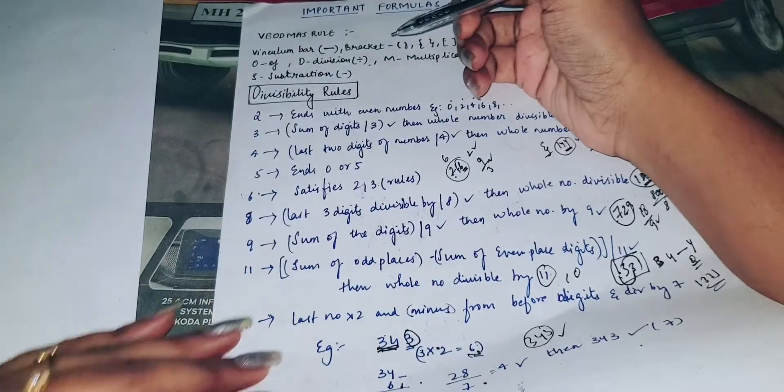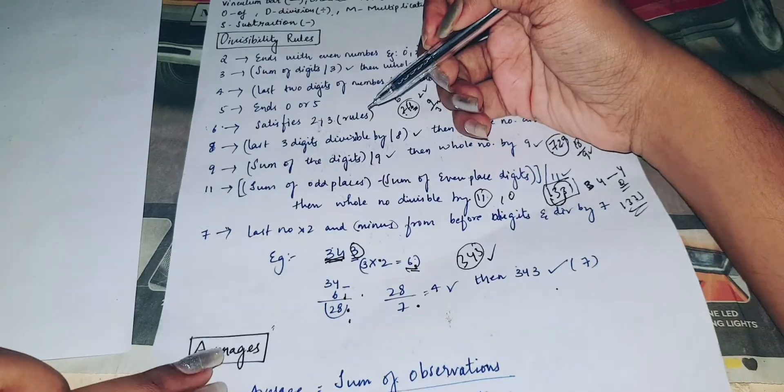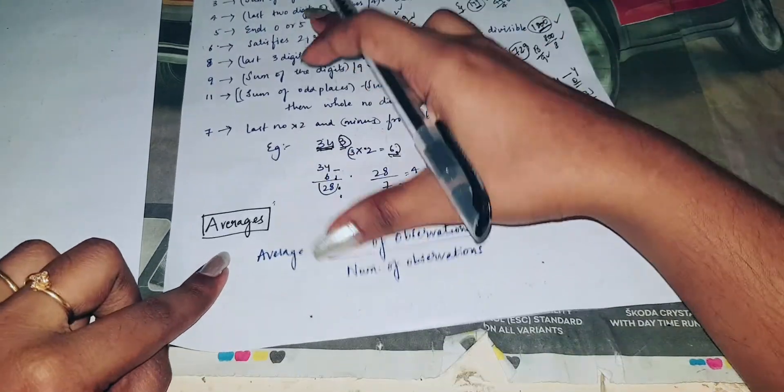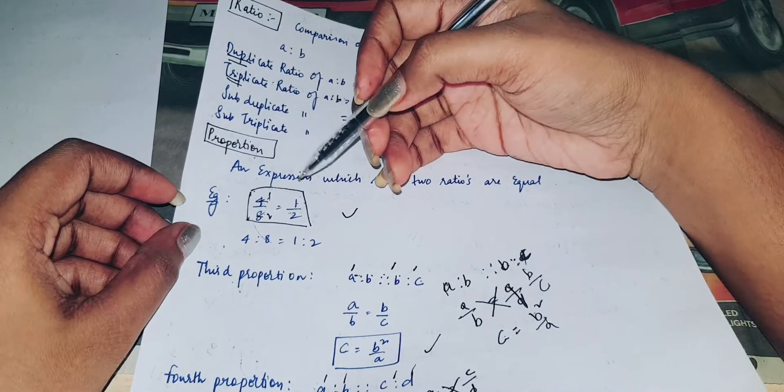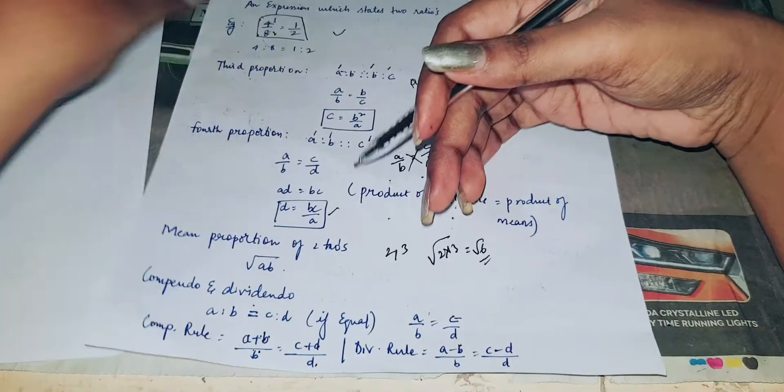So we have covered VBODMAS rule, divisibility rules, average, ratio and ratio types, proportion and proportion types. Next is the very important topic — percentages.